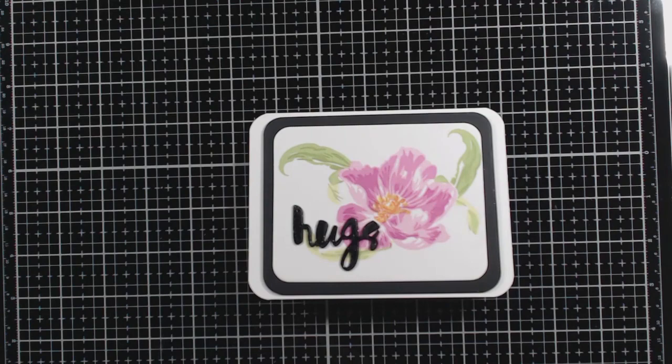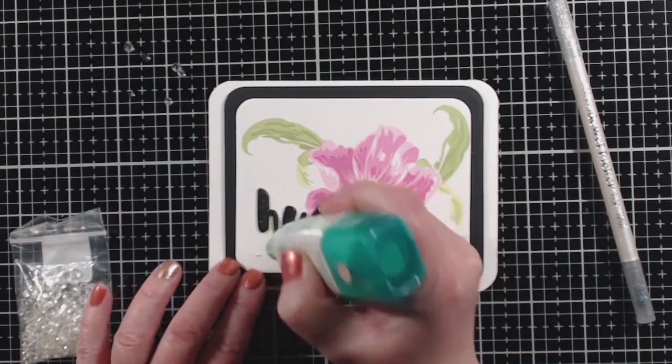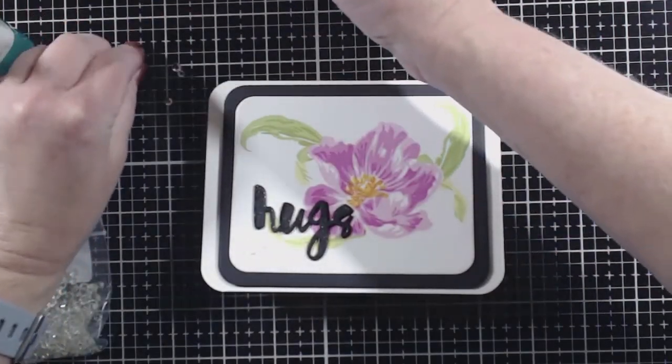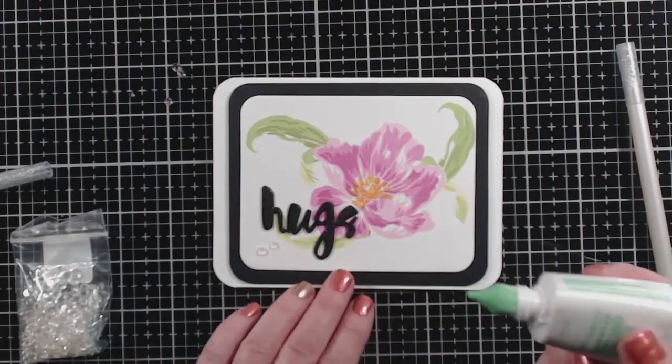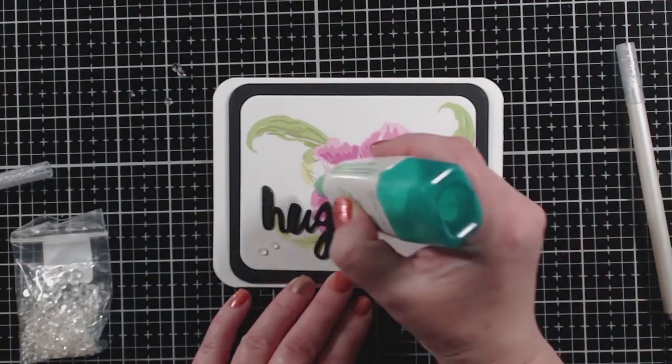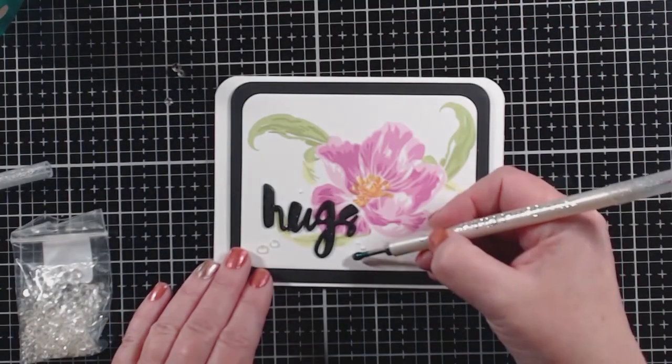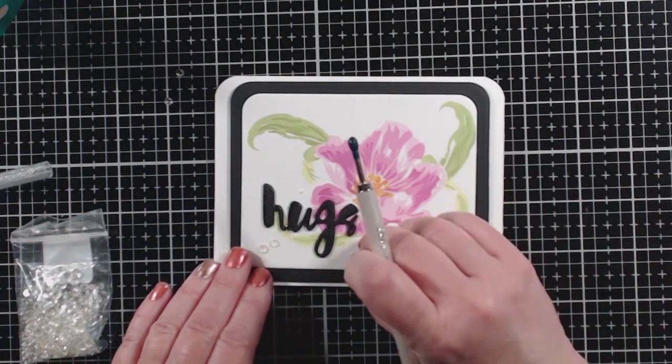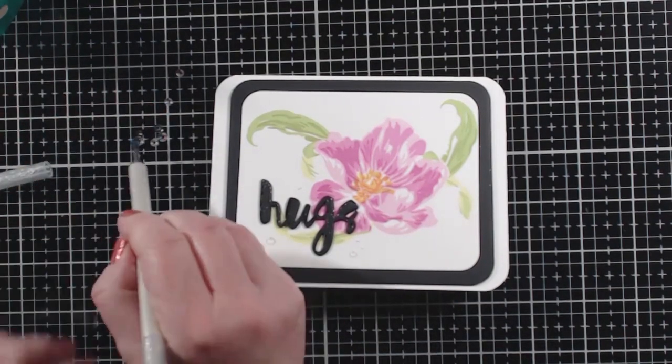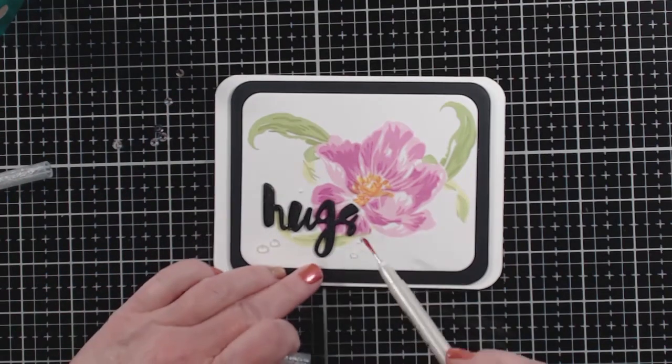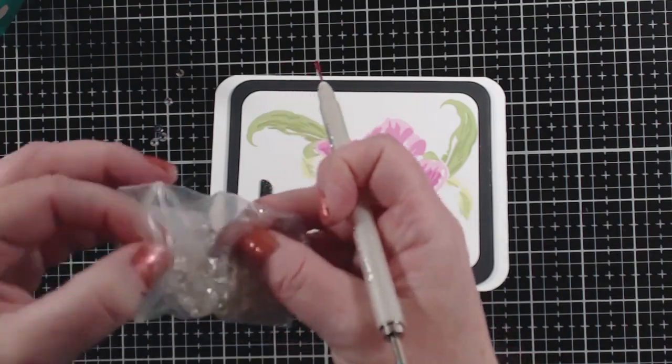Now I'm going to be putting on here some Studio Katia gems. I really love these. They're clear and they give a nice dimension and sparkle to the card. And they're pretty easy to put on if you have one of these gem pickers like I have here. You can get these in the jewelry section of a craft store. Of course, you can always get it from Simon Says Stamp or any other card making supply company like that online as well.